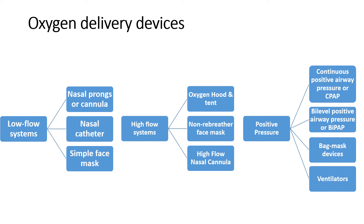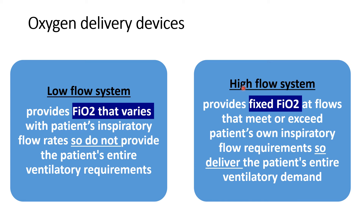The basic difference between low flow and high flow oxygen delivery devices: in low flow devices, the FiO2 varies with the patient's inspiratory flow rate, as these devices do not provide the patient's entire ventilatory flow. In high flow systems, the fixed FiO2 meets or exceeds the patient's own inspiratory flow requirement, delivering the entire ventilatory demand. High flow systems are used in moderate or severe respiratory distress conditions.